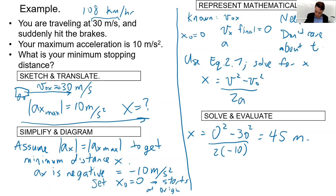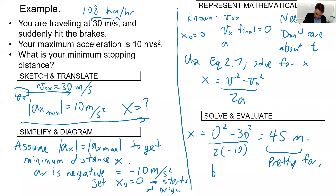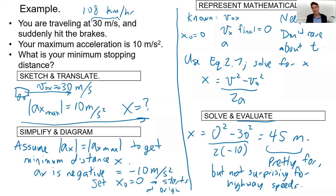So the stopping distance is 45 meters — about halfway down a soccer field. That's not surprising for highway speeds. You should evaluate your answer: if I had gotten 4.5 centimeters going at 108 km/h, that wouldn't make sense. But 45 meters sounds about right.